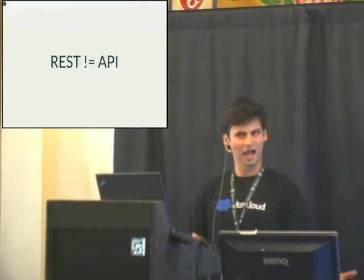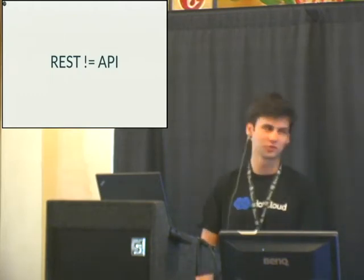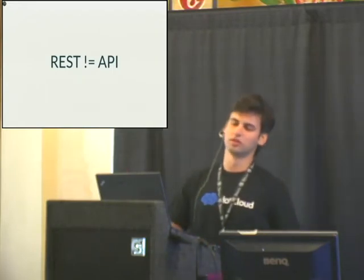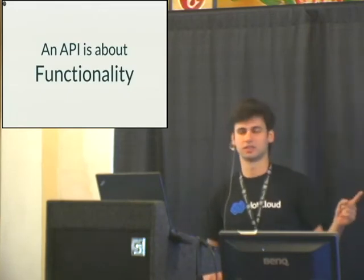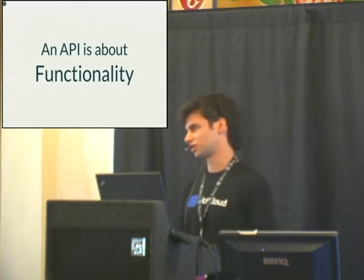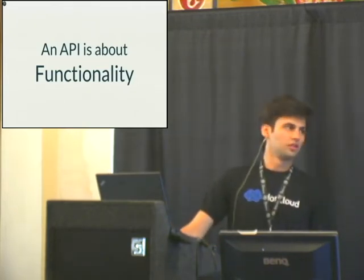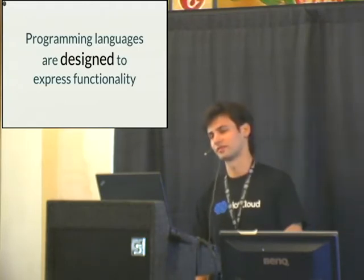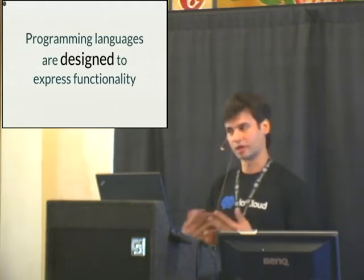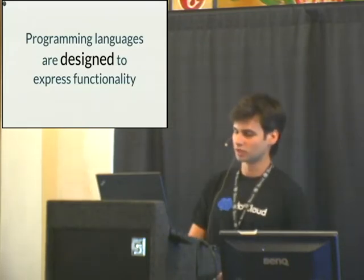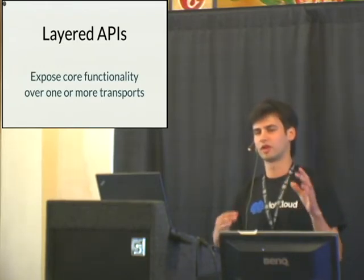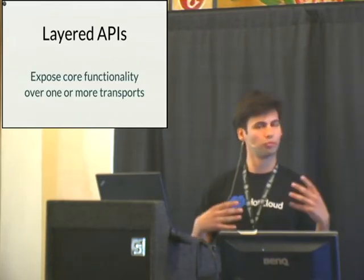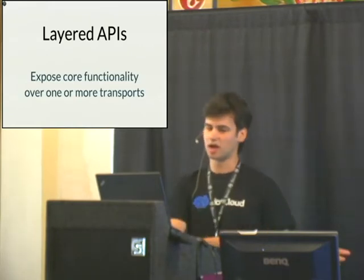The point is it doesn't actually matter that much in the grand scheme of things. Because really your REST API — what I want to argue — is not your API so much. Your API is about the functionality behind it, and your REST API is just one possible serialization of that functionality. It just so happens that we have this tool designed expressly to express functionality, and that's programming languages. Python is pretty nice for expressing functionality in an API. What I'm actually going to argue today is that we should be building and thinking about our APIs as being more layered.